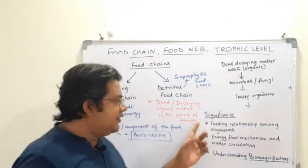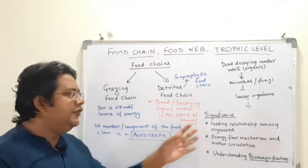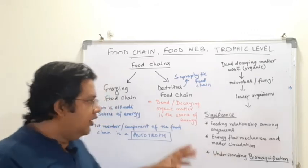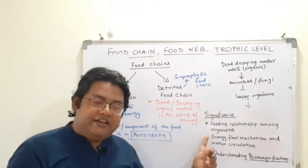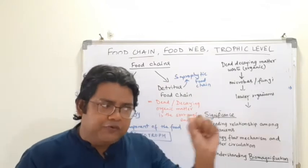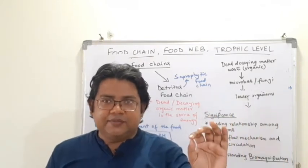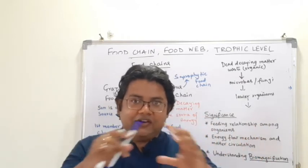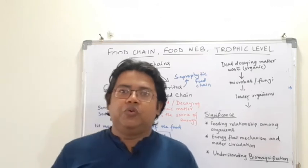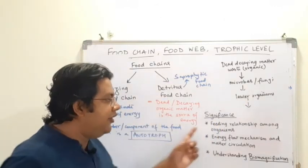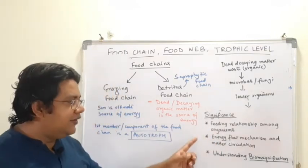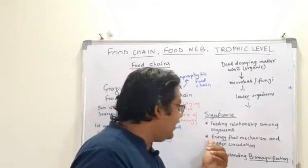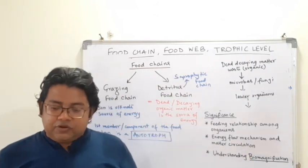To conclude, let's understand the significance of the food chain. First, it gives an idea about the feeding relationships among organisms. By studying a food chain, we learn how each organism feeds on other organisms, and what the relationship and interactions are between the members of the food chain. Second, energy flow mechanisms and matter circulation can also be understood from the food chain.